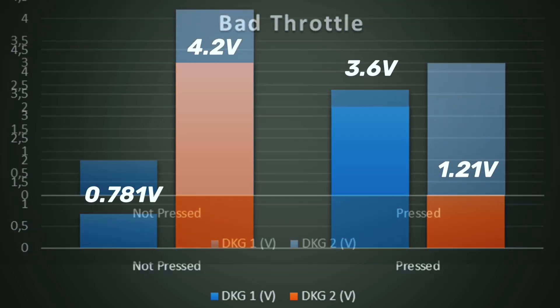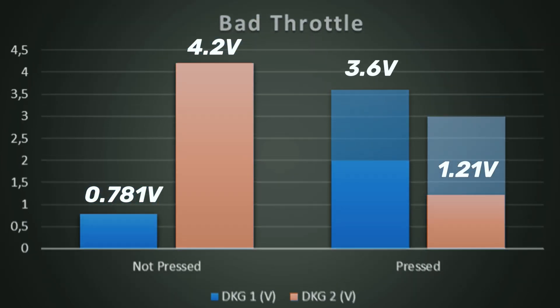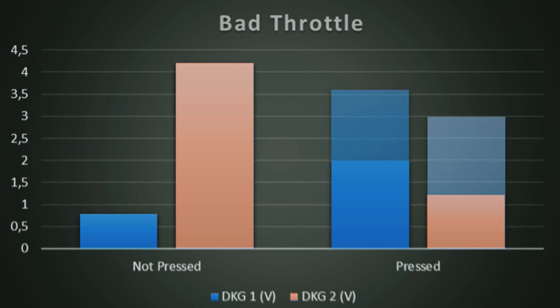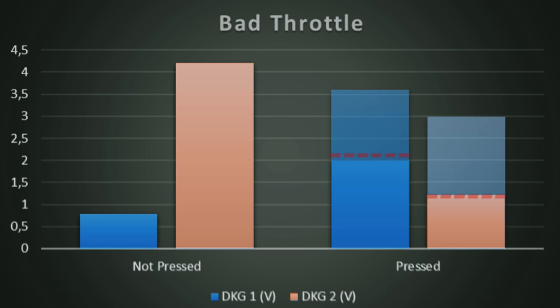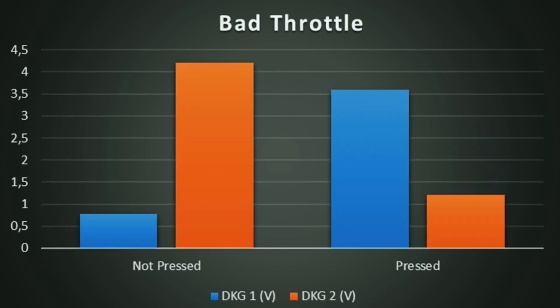With the good voltage graph overlaid over the bad one, we can see DKG1 on the left has too much voltage compared to what there should be, and DKG2 on the right doesn't have enough voltage. Both of those things are going to stop it working and set the fault codes we are seeing. On the unpressed side it works reasonably okay, but on the pressed side — full throttle — it's not right at all. You can see the values are nowhere near where they need to be.